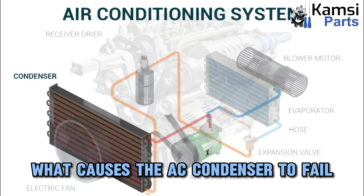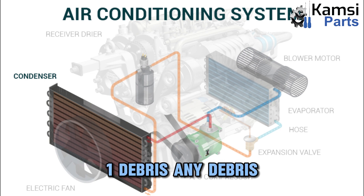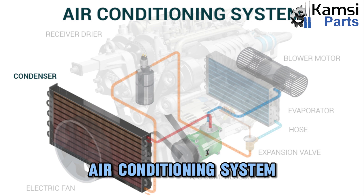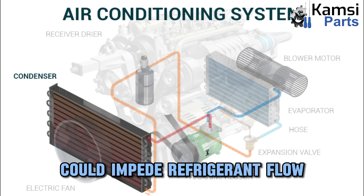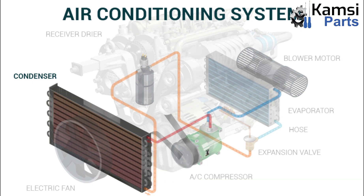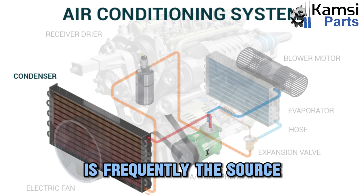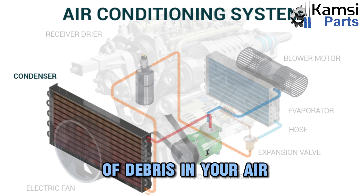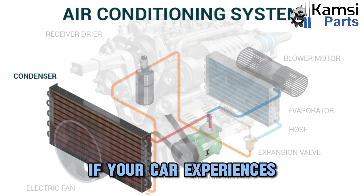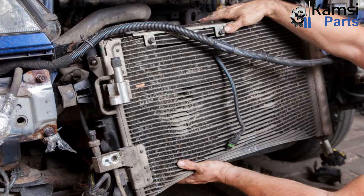What causes the AC condenser to fail? Here are some of the things that can cause an AC condenser to fail. 1. Debris. Any debris that enters your air conditioning system could impede refrigerant flow or harm your condenser by damaging it as it passes through. A damaged compressor, which spews out tiny metallic particles, is frequently the source of debris in your air conditioning system. If your car experiences this problem, you will need to completely repair the compressor and the condenser.